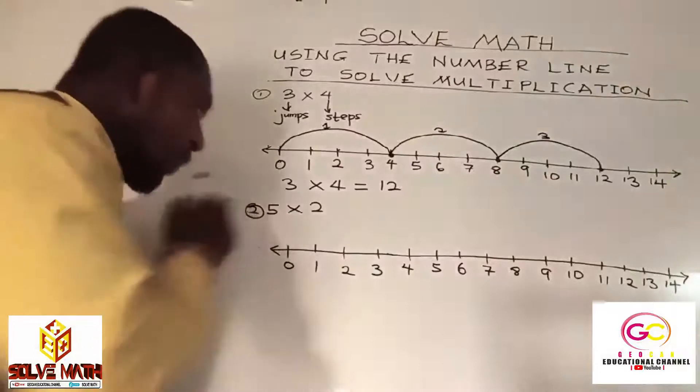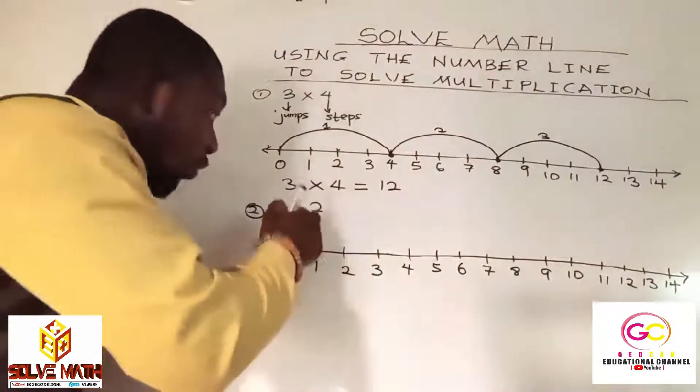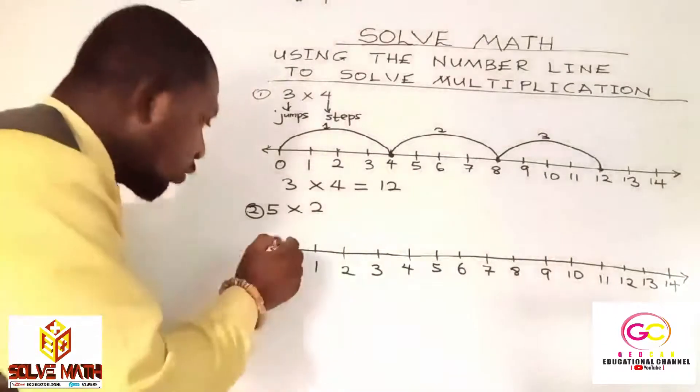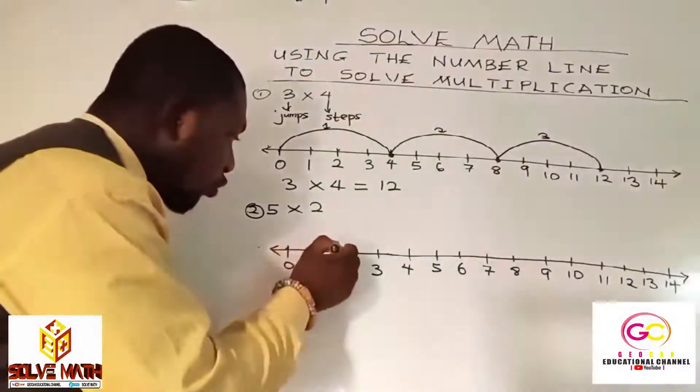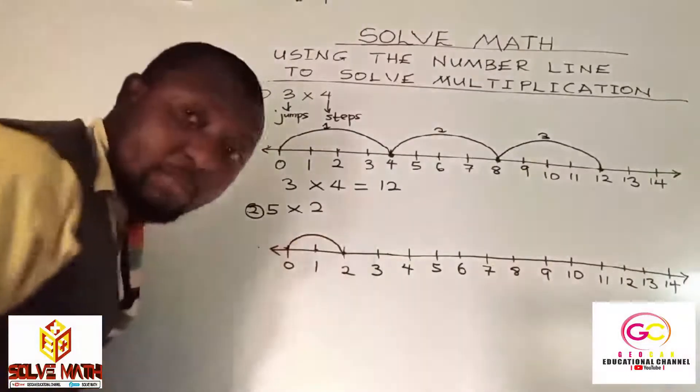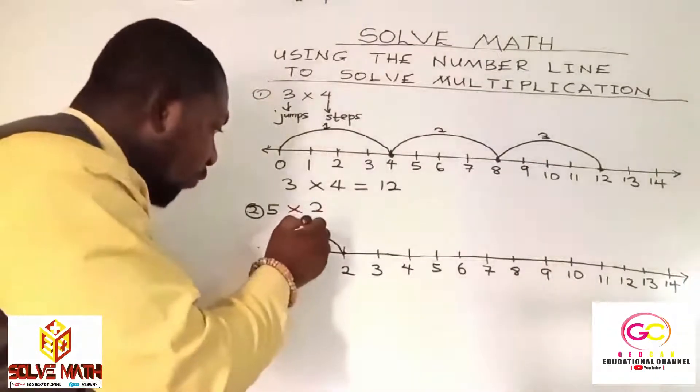So, now we have the number of jumps. We have five jumps. But in each jump, we have two steps. Right? So, let's do our first jump. But we need two steps. So, one, two, the steps. So, you draw your arc. From here to here becomes your first jump. So, jump one.